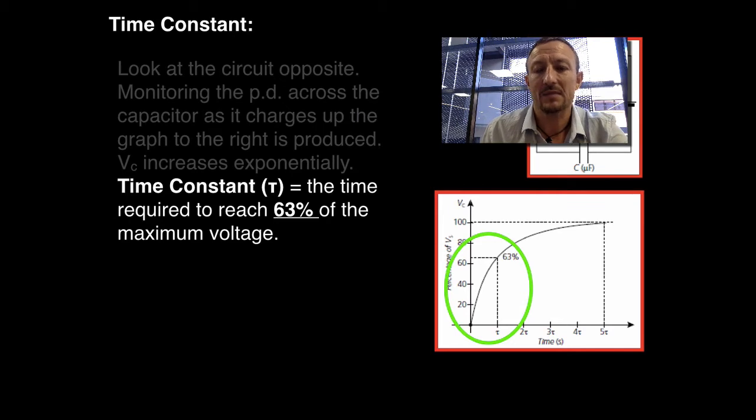Now it's given the symbol tau, which is the Greek letter for T. So tau, or one time constant, is 63% of the maximum voltage.